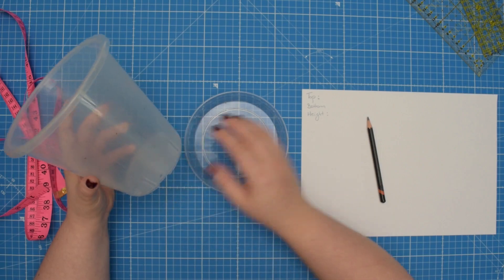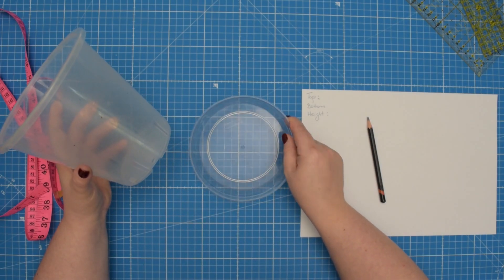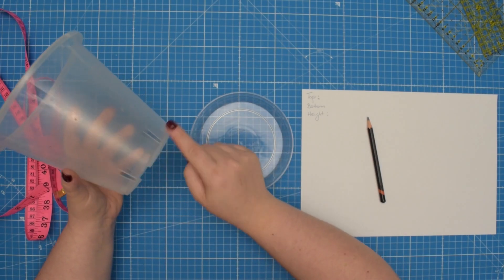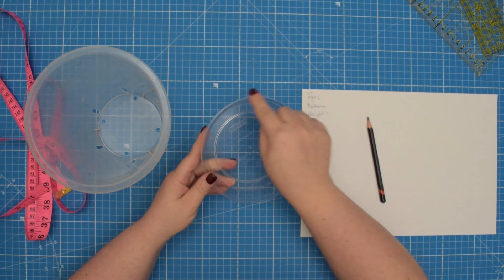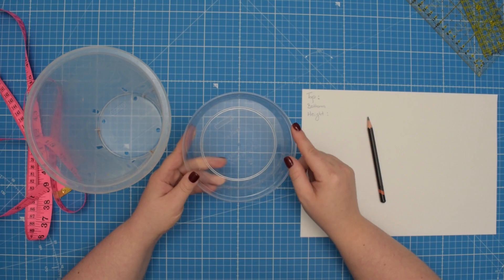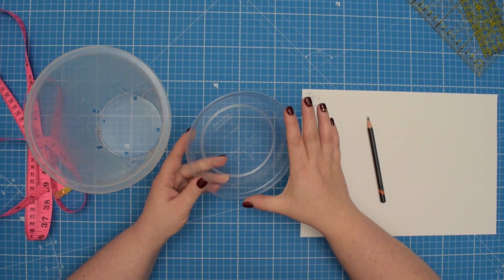If your flower pot comes with a tray, then instead of measuring the bottom edge of your flower pot, measure the circumference of the tray, the widest portion of the tray.